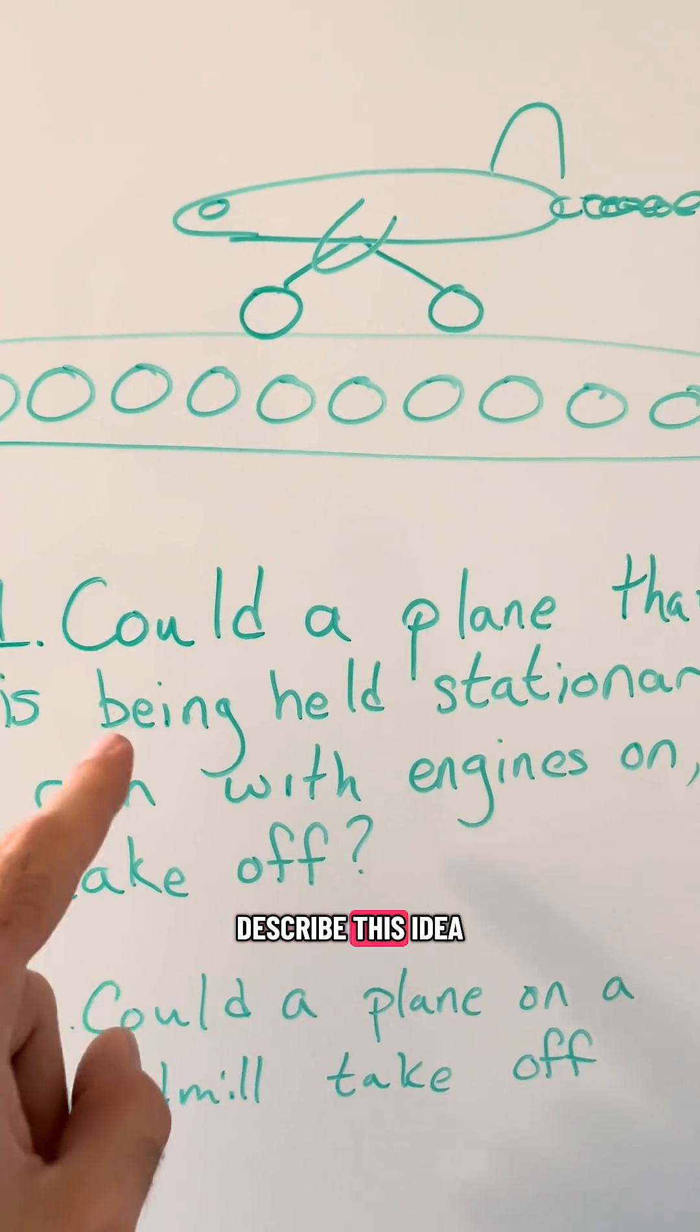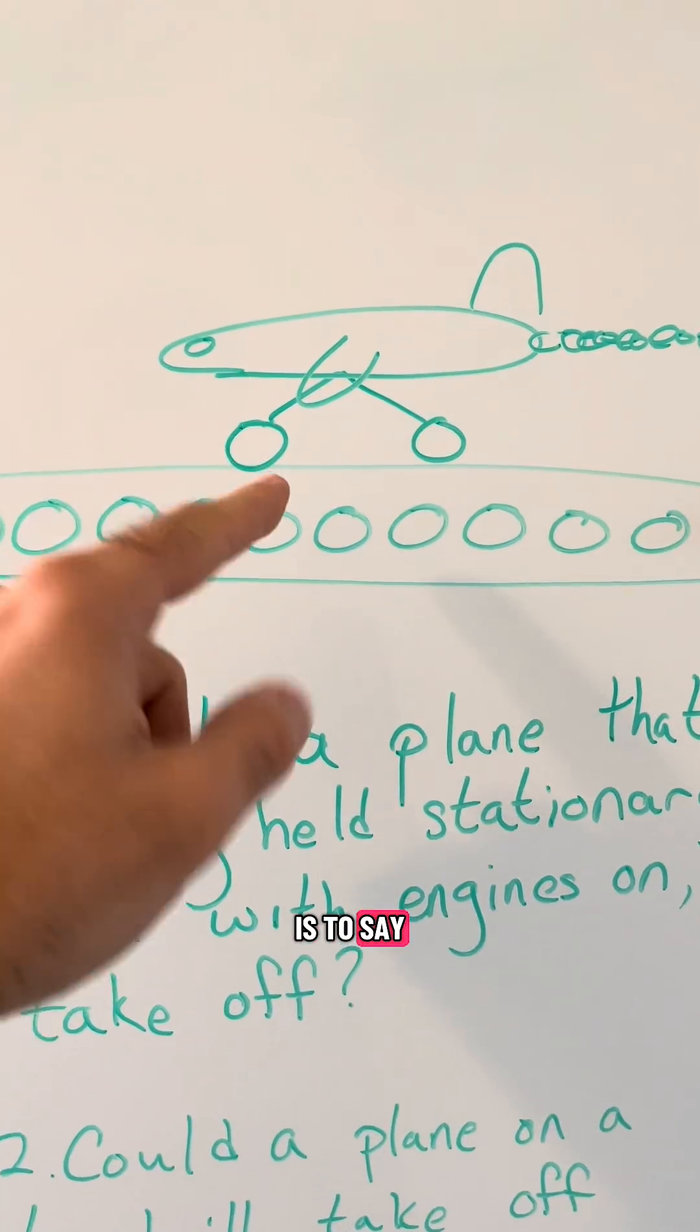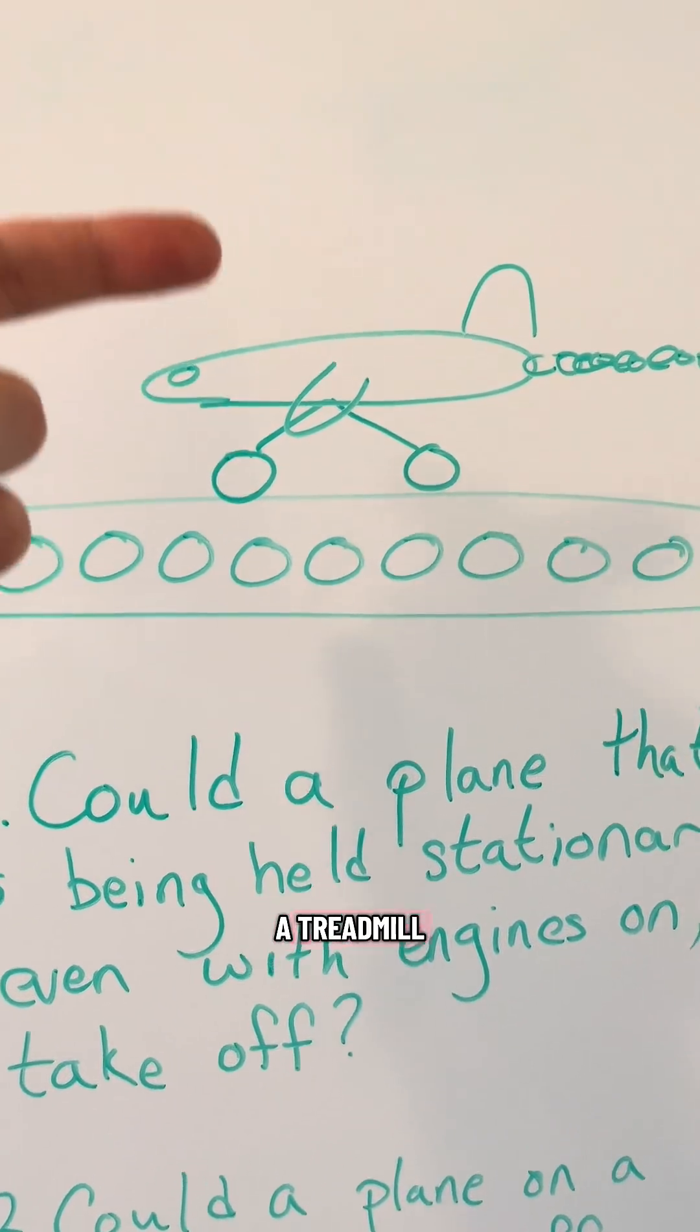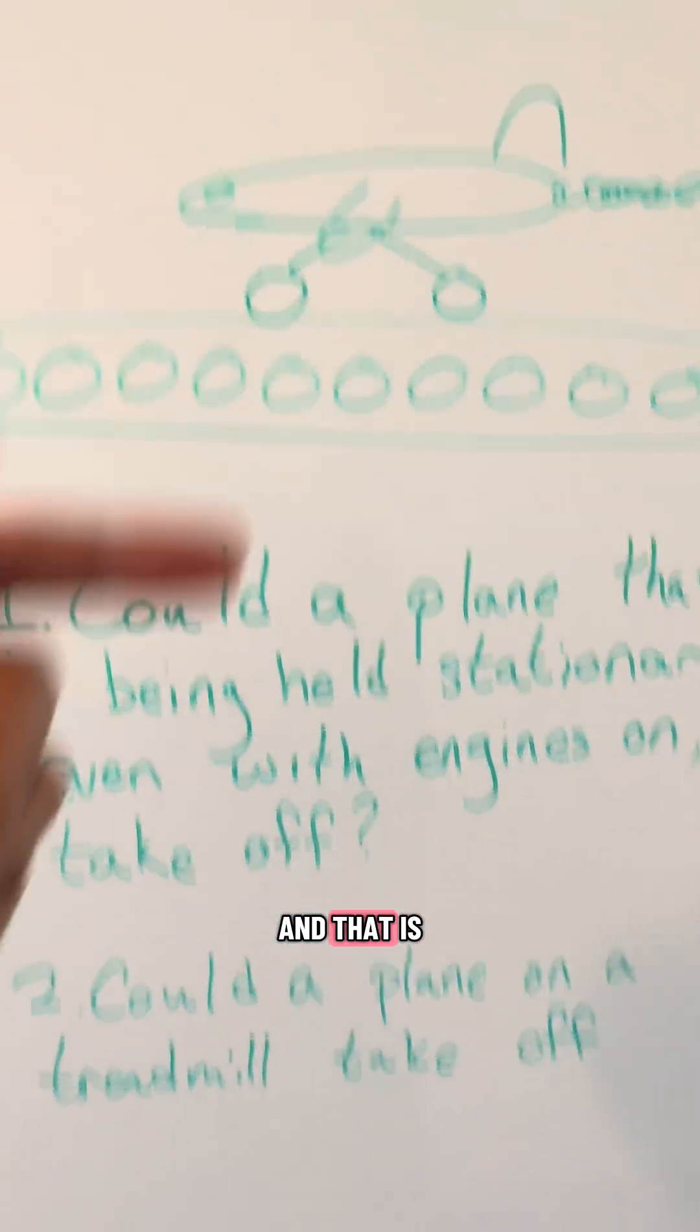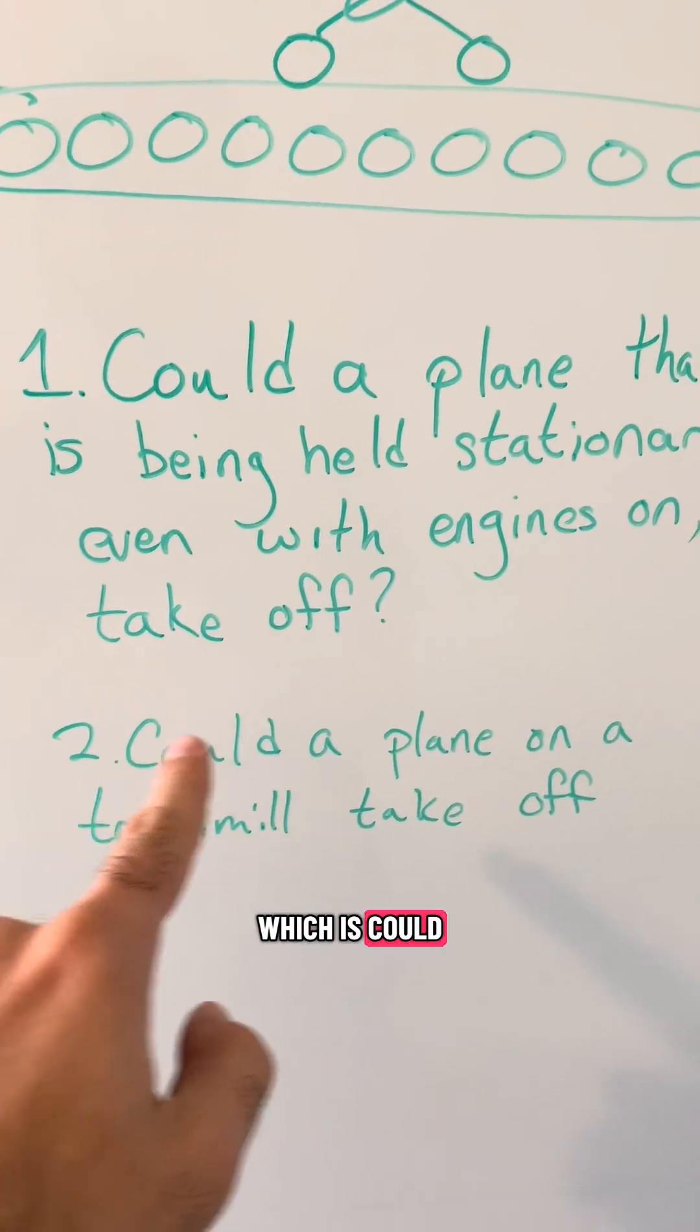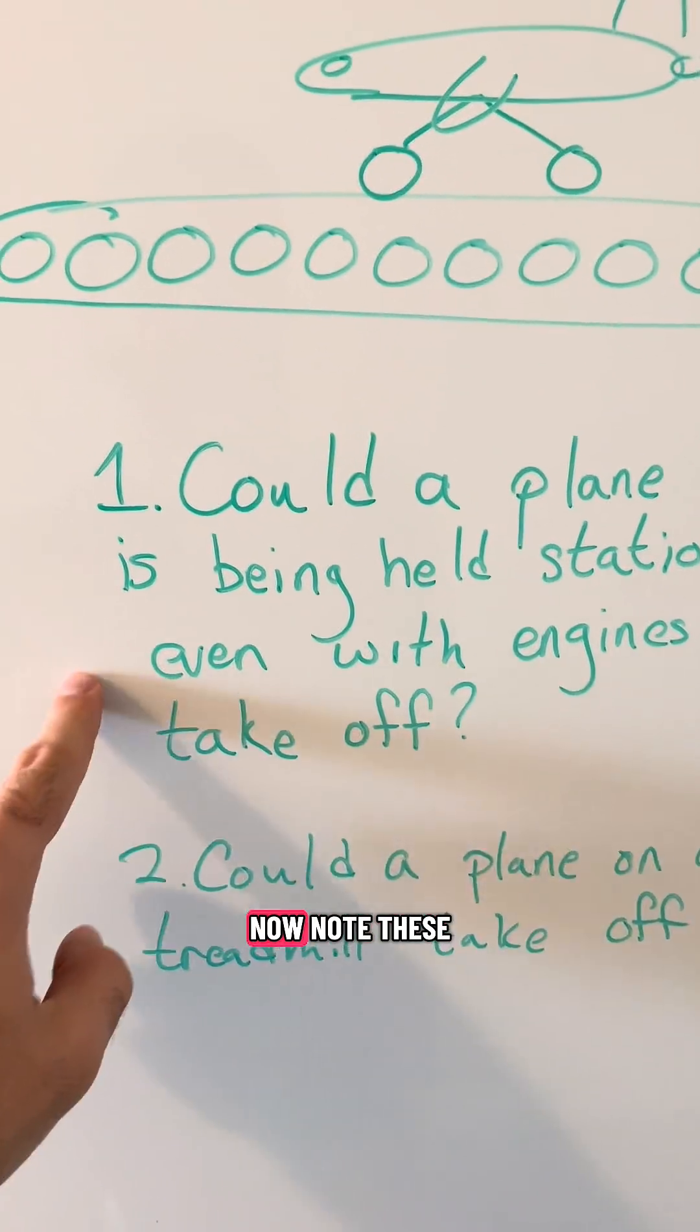...people describe this idea of a plane being held stationary is to say, 'what if a plane was on a treadmill?' So the plane is trying to go forward but the treadmill is pushing it back. That is where the second problem is: could a plane on a treadmill take off? Now note these are two different problems because treadmills cannot keep planes stationary.